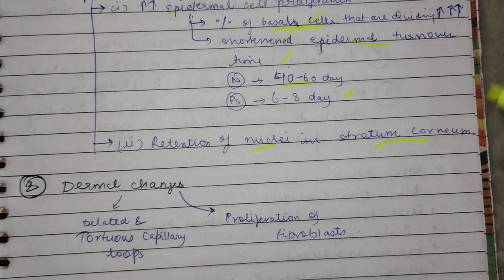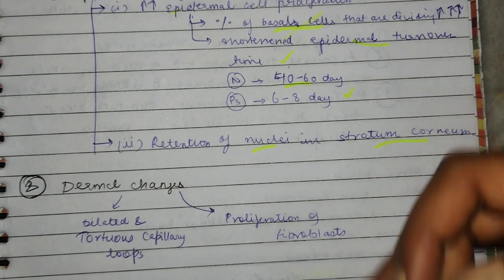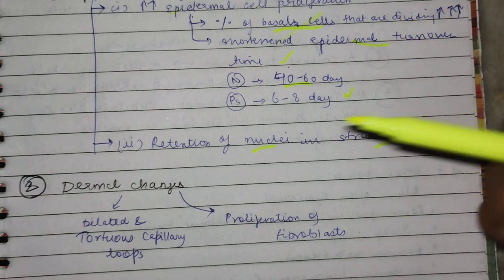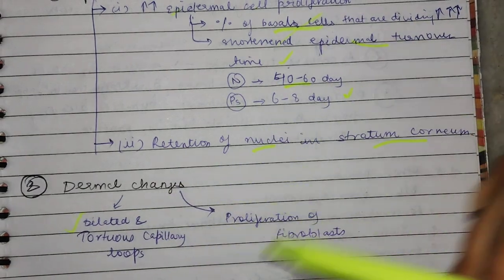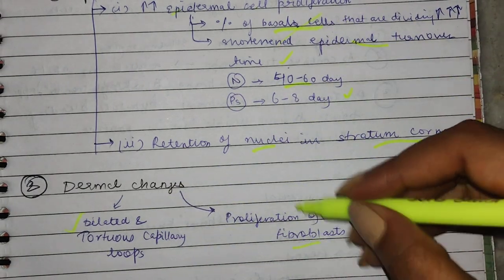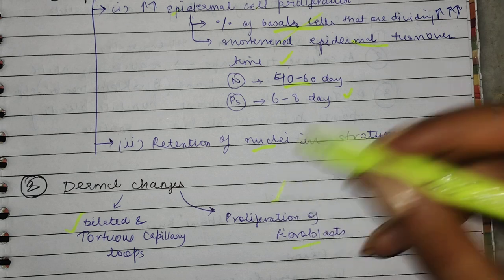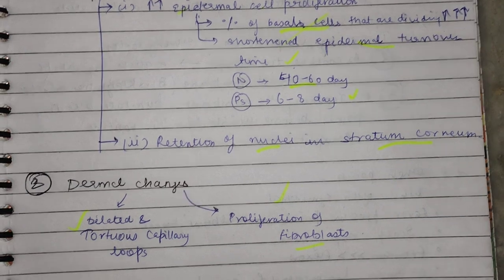We have seen the dermal changes. There is capillary formation — dilated and tortuous capillary loop formation — and fibroblast proliferation.